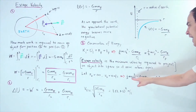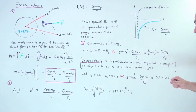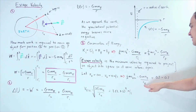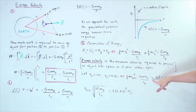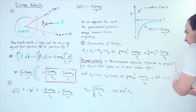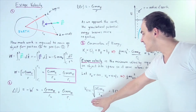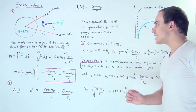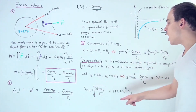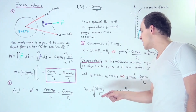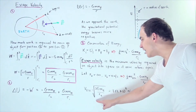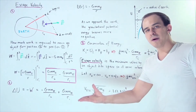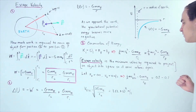This gives us: one-half m·v_escape² minus G·m·M_E divided by R_E equals zero, since our object begins on the surface of the Earth. Bringing the gravitational term to the right side and solving for the escape velocity, we get the formula: v_escape equals the square root of two times G times the mass of the Earth divided by the radius of the Earth. These values are all constants, which we can plug into a calculator.